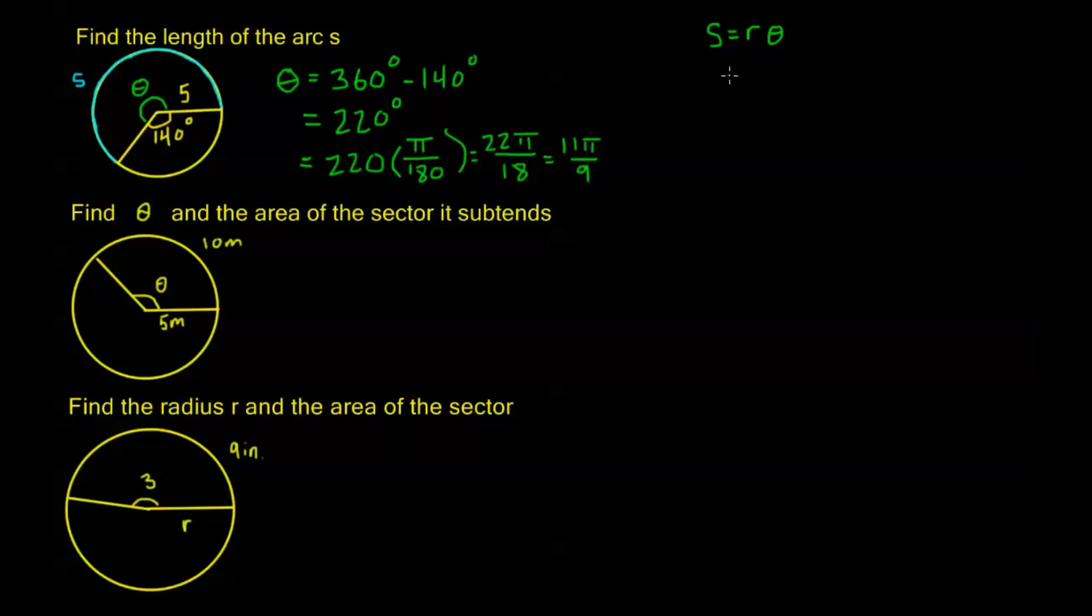So, we can ignore those zeros now, those zeros will cancel, I get 22π over 18, and I can simplify that down even more to 11π over 9. So, now, coming over here, calculating out S, my radius of this circle is given, and the problem is 5, and θ we just found to be 11π over 9, so my total arc length S is going to be 55π over 9, and that's it. We're done with that problem. Easy peasy.